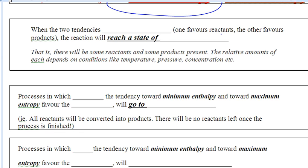So there will be three scenarios that will pop up. When two tendencies oppose each other — meaning one favors reactants and one favors products — they're going to play tug-of-war and no one's going to win. You're going to reach a state of equilibrium.